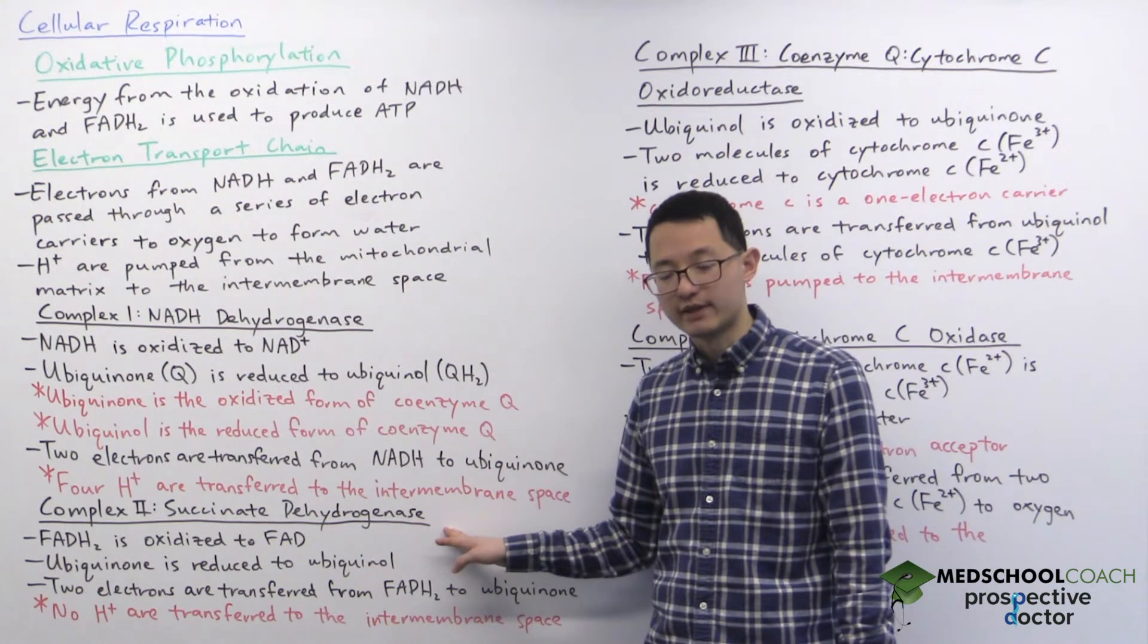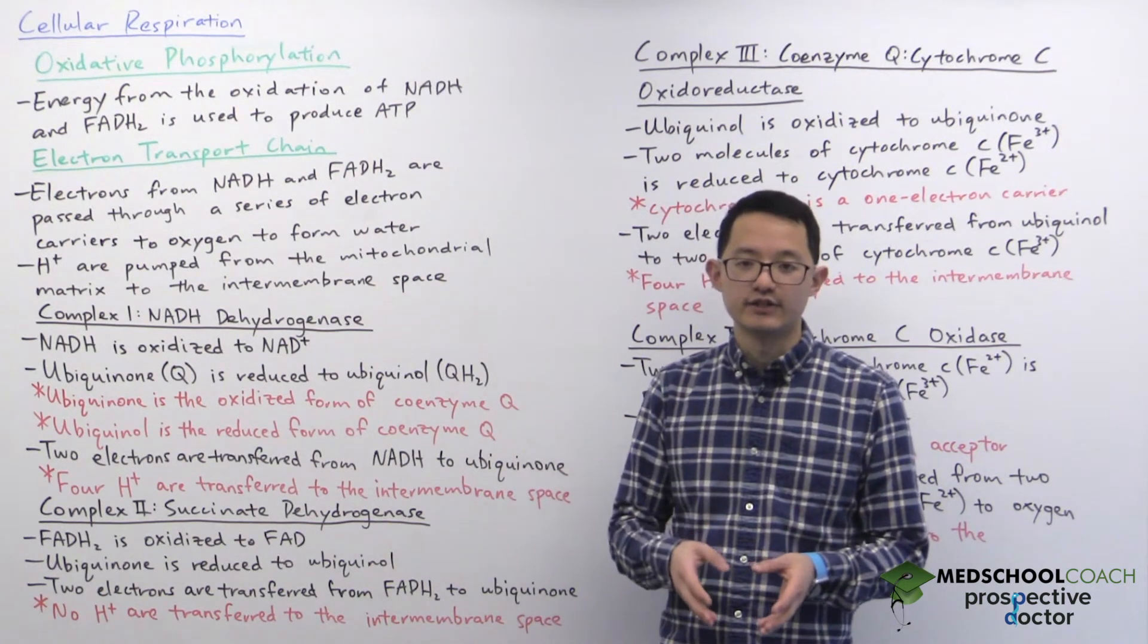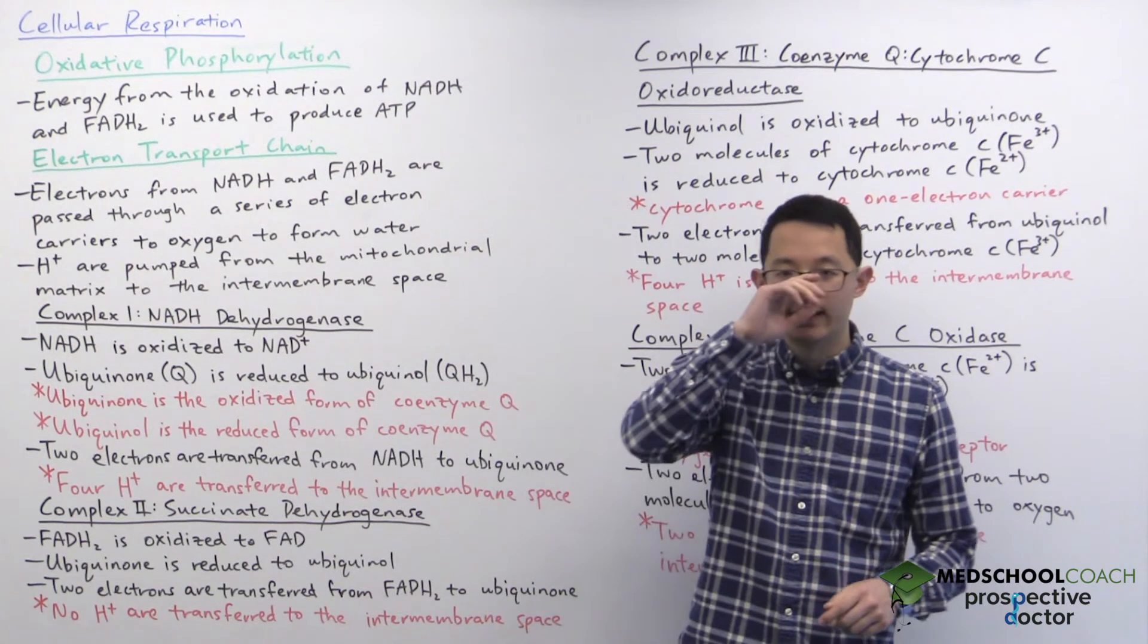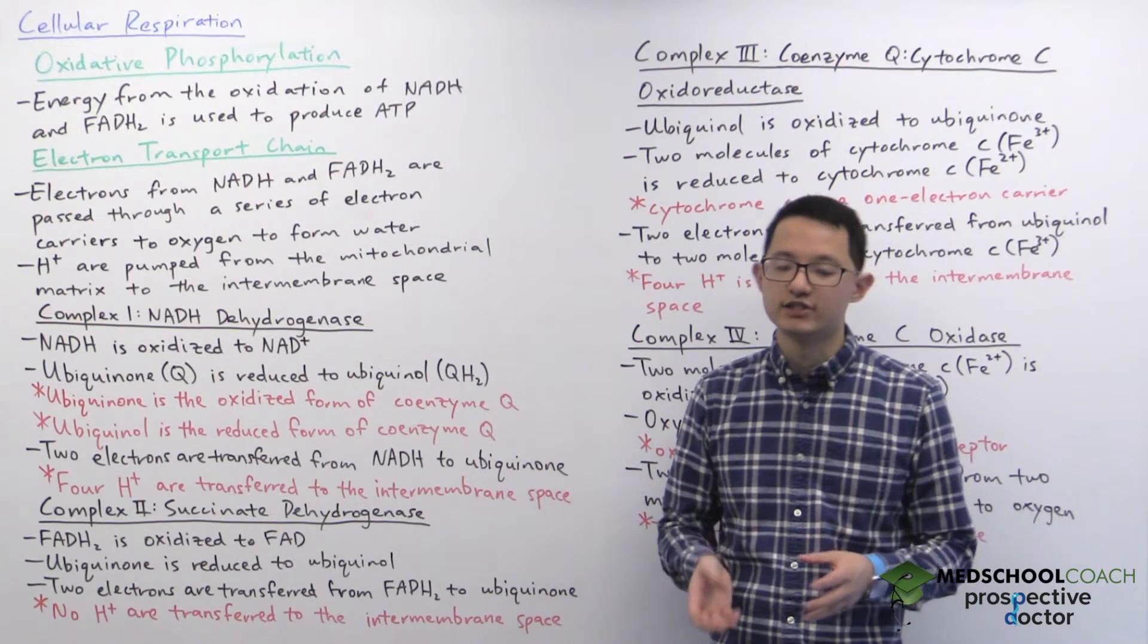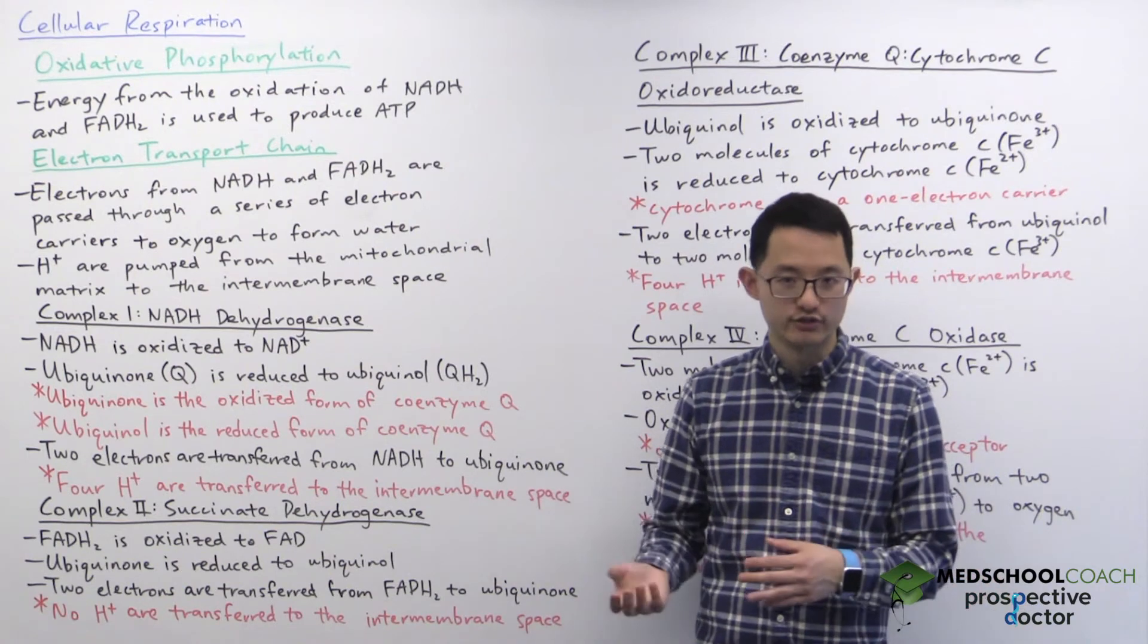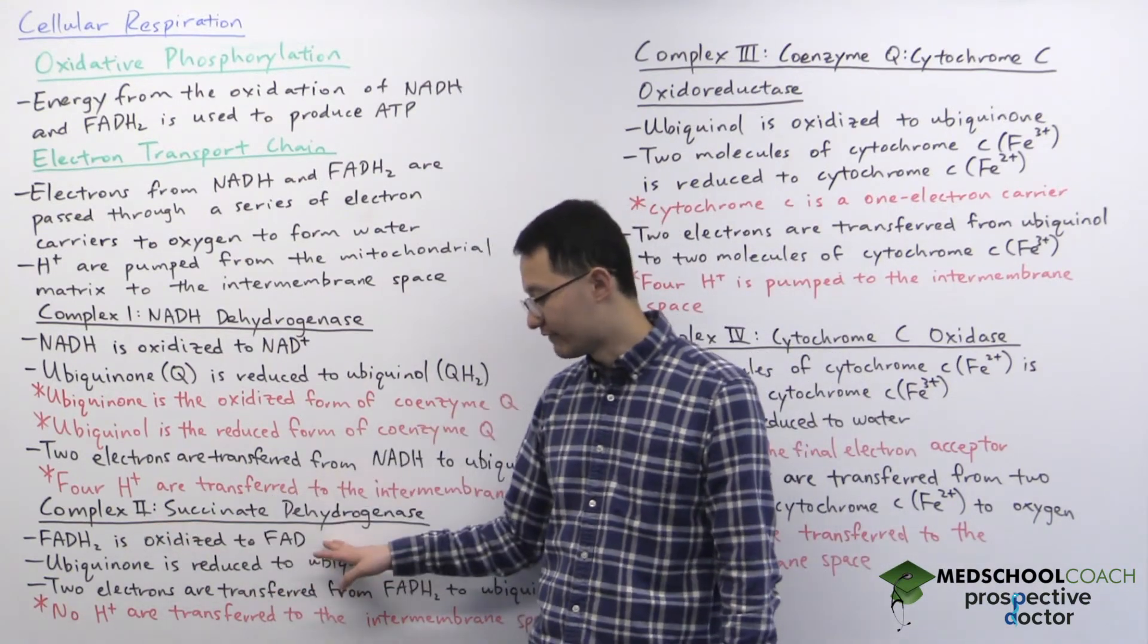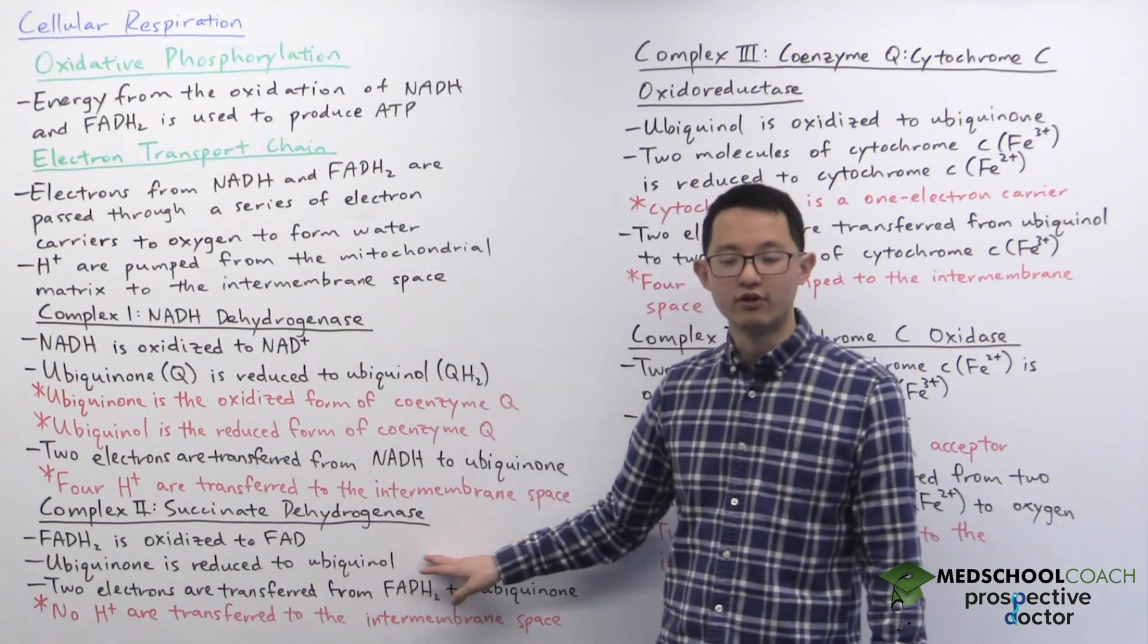We can now talk about complex 2, which is succinate dehydrogenase. As we discussed, succinate dehydrogenase is the only enzyme that participates in both the citric acid cycle and the electron transport chain. In the citric acid cycle, succinate dehydrogenase catalyzes the oxidation of succinate to fumarate and the reduction of FAD to FADH2.